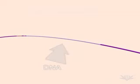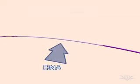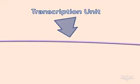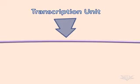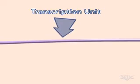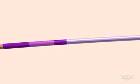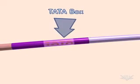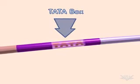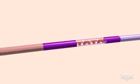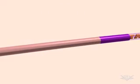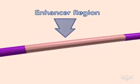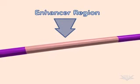Transcription begins with a strand of DNA, which is divided into several important regions. The largest of these is the transcription unit — the portion of the DNA that will be used to produce RNA. Upstream of the transcription unit is the TATA box. An enhancer region may also be involved.